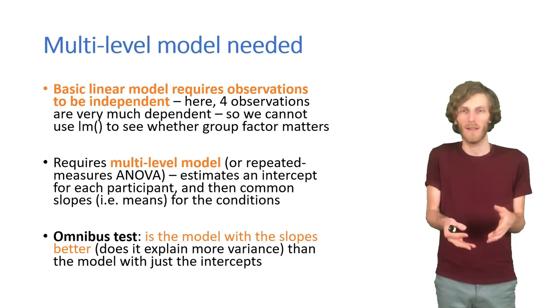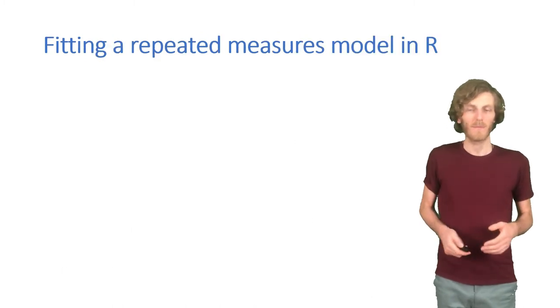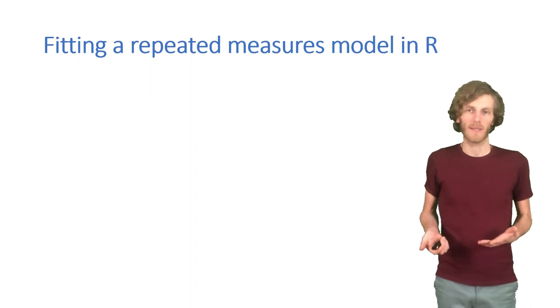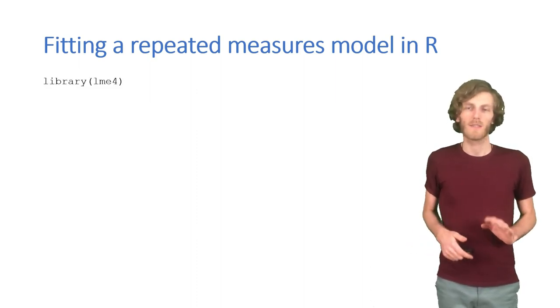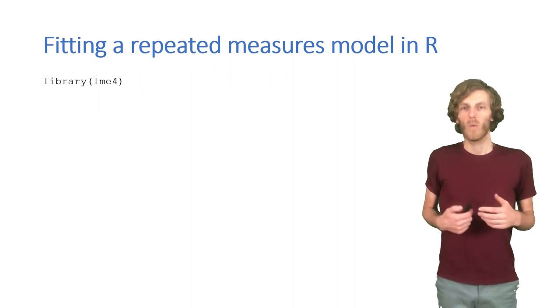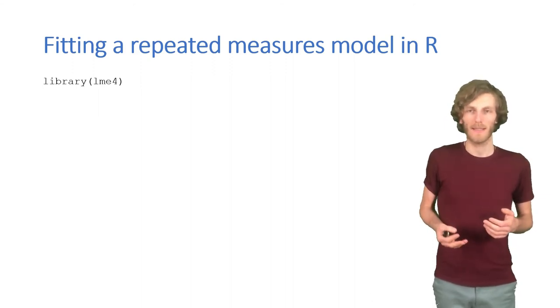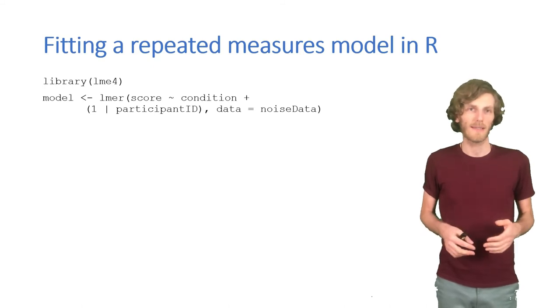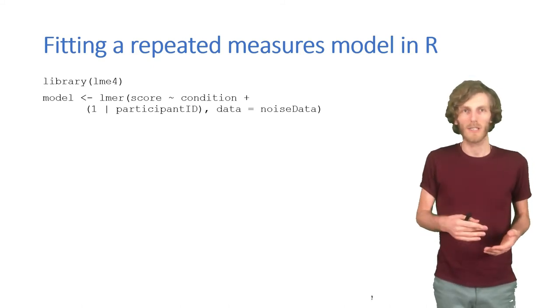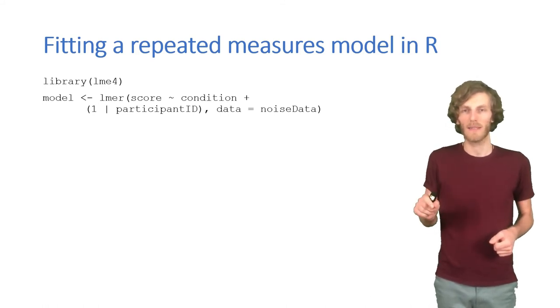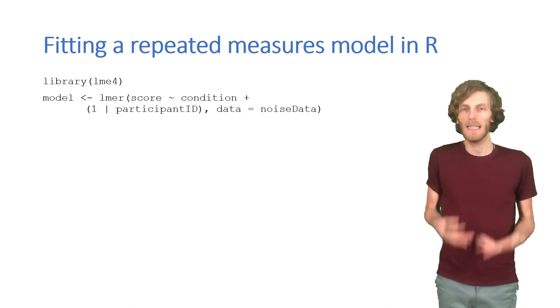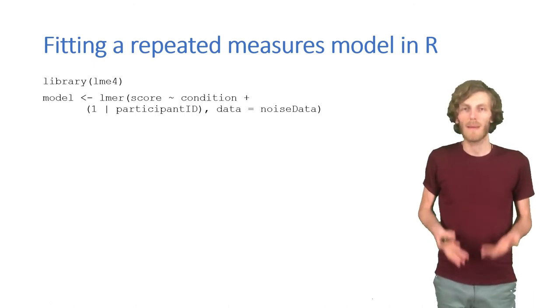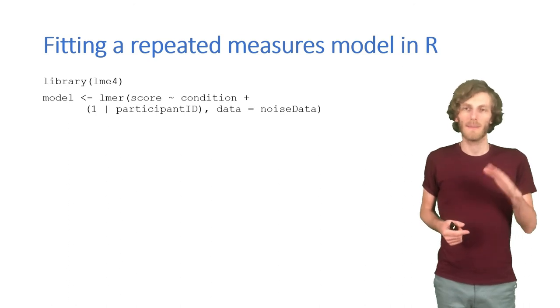We see whether adding the groups to the model makes it any better. So to fit that model in R we cannot use LM, because LM only works for independent observations. We need to use a special function for multilevel models. One of the best ones comes from this LME4 package, and it's very similar to the single-level linear models. So here we fit a model to predict the score based on condition, and based on an intercept for each participant. The idea behind that is, each participant has a different baseline memory ability in this case, that we need to account for. Once we have accounted for that, we can estimate the impact of each group.